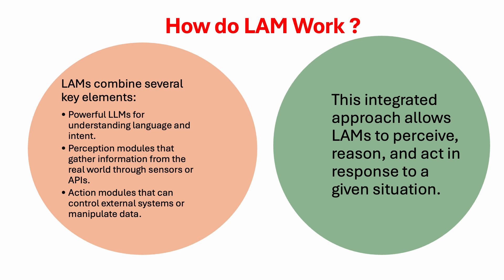Imagine a LAM connected to your smartphone system. It could use the information it gathered — weather data or calendar events — to automatically adjust the temperature in your house before you arrive. This integrated approach of understanding language, perceiving the environment, and taking action allows LAMs to operate in a truly intelligent and automated way.